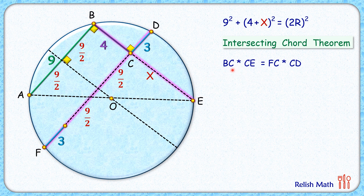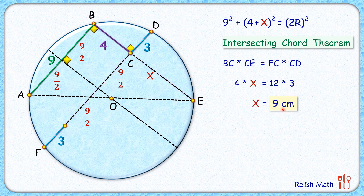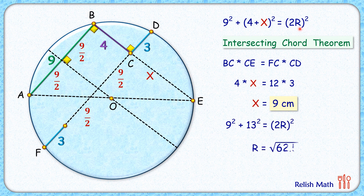Applying the intersecting chord theorem: BC × CE = DC × CF. Putting in the values: BC = 4 cm, CE = x, CF = 3 + 9 = 12 cm, and CD = 3 cm. Simplifying gives x = 9 cm. Substituting back: 9² + 13² = (2R)², and solving gives R = √62.5 cm, or R ≈ 7.91 cm. That's our answer.